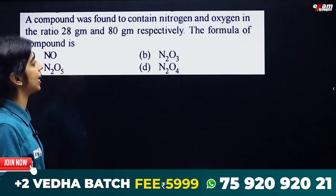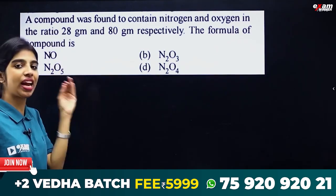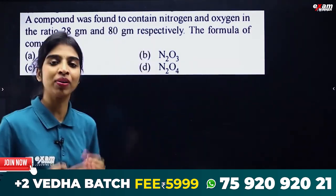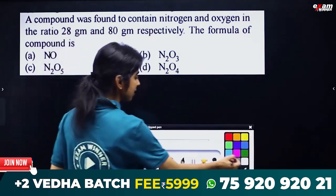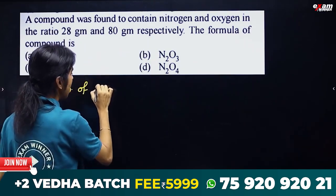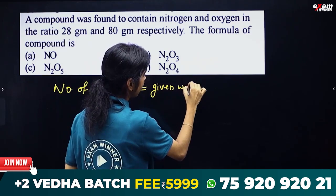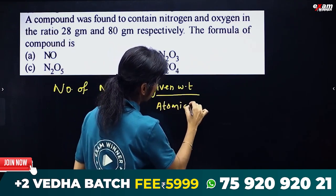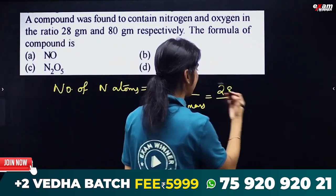A compound was found to contain nitrogen and oxygen in the ratio of 28 grams and 80 grams respectively. The formula of the compound is? We find the number of nitrogen atoms using given weight divided by atomic mass. We put in 28 grams divided by atomic mass.